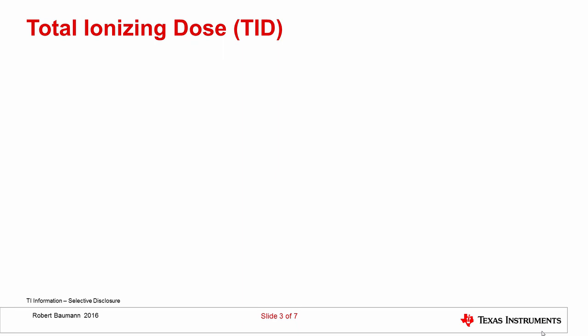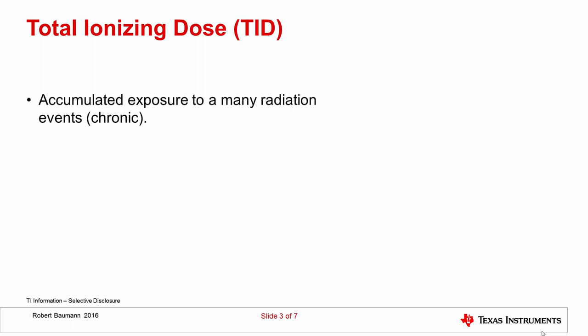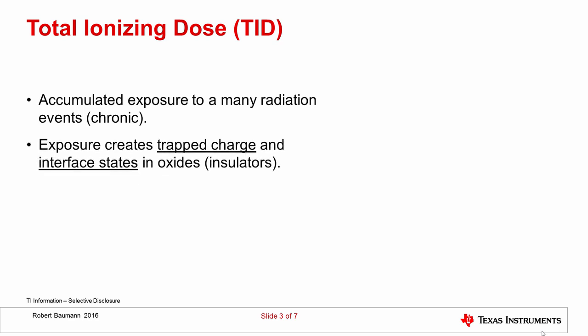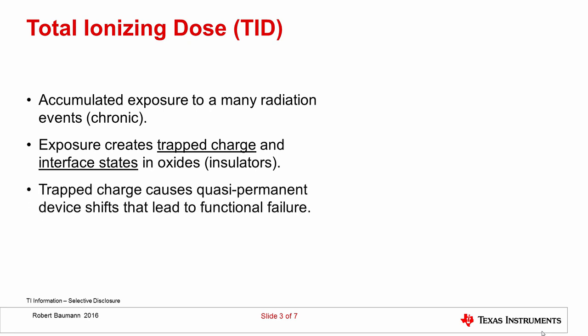So what is total ionizing dose? With that introduction, we think about it as an accumulated exposure to many radiation events — a chronic exposure. Think of a satellite in orbit going around and around through the radiation belts, accumulating the radiation dose over time. The primary mechanism is that this exposure to radiation creates trapped charge and interface states in the gate oxides and isolation oxides. Basically, insulators — because of their electrical properties — trap this charge. In insulators, this transient charge can actually be permanent, because it gets trapped where it can't move. And finally, this trapped charge accumulating over time causes quasi-permanent device shifts that lead to functional failures.